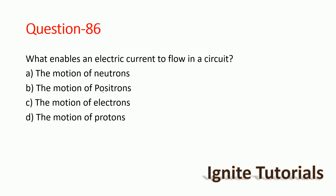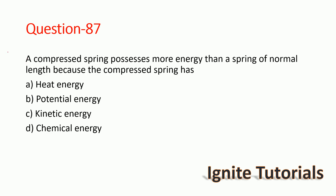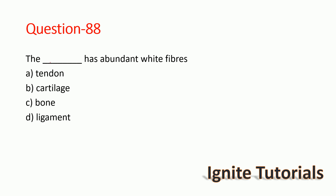The correct answer is option C — the motion of electrons enables electric current to flow. Question 86: A compressed spring possesses more energy than a spring of normal length because a compressed spring has potential energy — option B is correct.